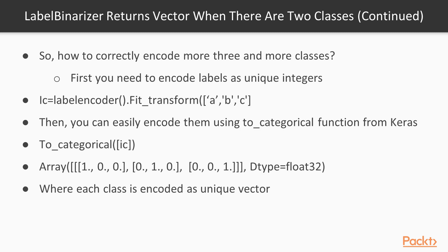To correctly encode more than two classes, first encode the labels as unique integers using scikit-learn's LabelEncoder — initialize it and run fit_transform on your Y dataset. This assigns a unique number to each class. Then, since we're working with deep learning models in Keras, use the very handy to_categorical function to convert those encoded labels into one-hot vectors. Once done, you have properly encoded classes as one-hot vectors compatible with your dense layer and softmax activation function.